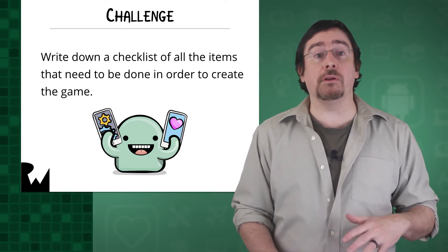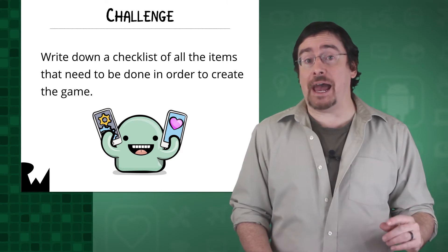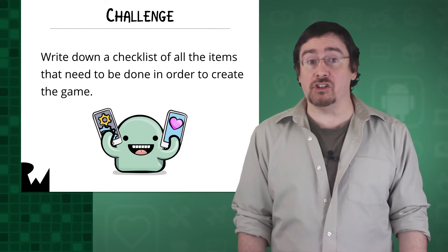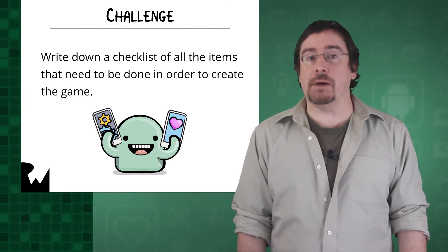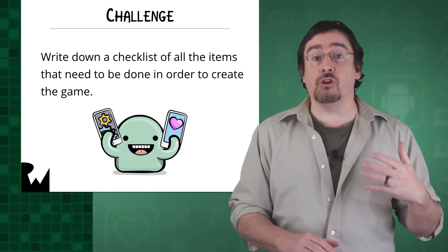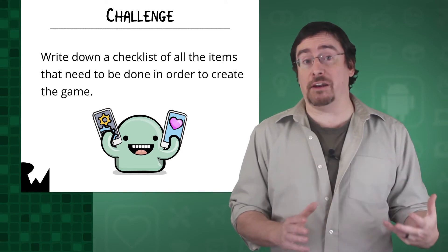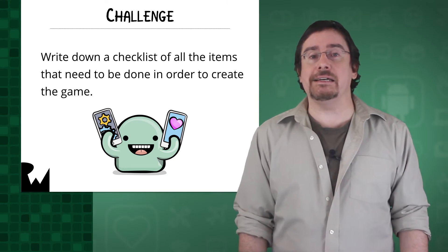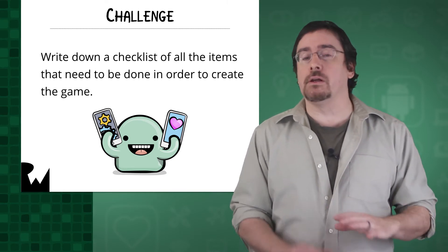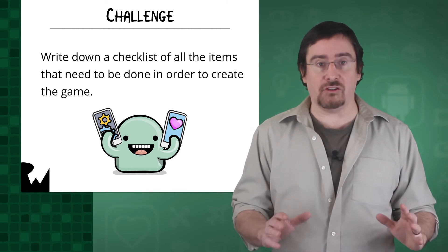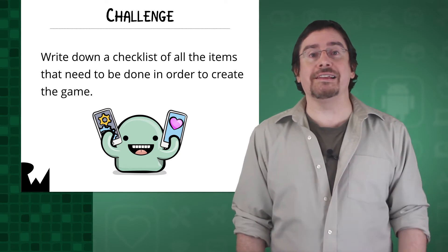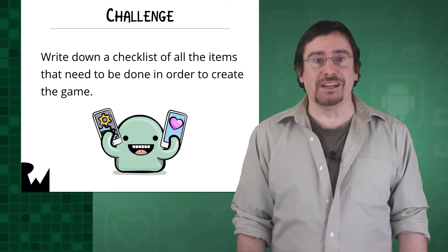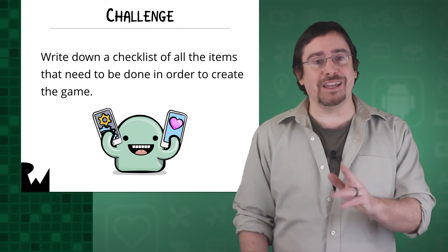and jot everything down you think you might need to do in order to get a working game. You can start with something simple like add a button to be tapped, but start thinking about everything you've seen in the demo game and what elements and actions might be needed to achieve that. Don't worry if you don't know how to code these things. We'll get to that. All you need to do right now is make as detailed a list as possible. There are no right or wrong answers. All you need first is a list of things to do. Then we'll go about learning how to achieve your objectives. Now pause the video and get writing.